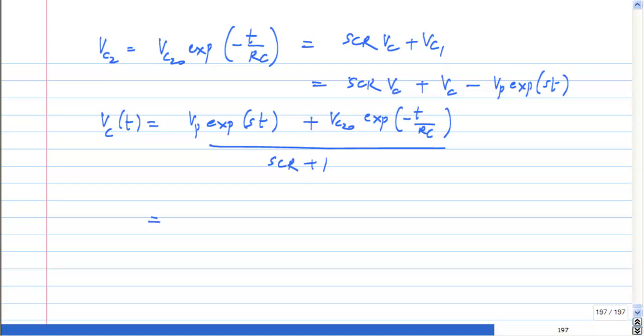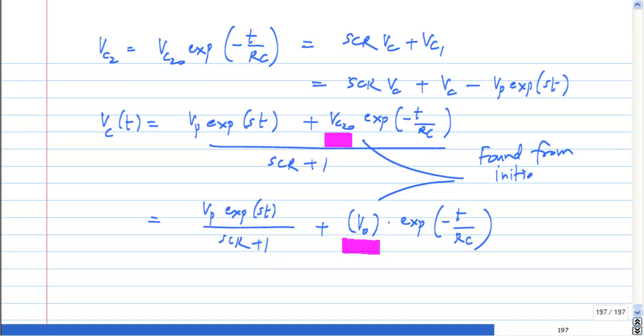Now you can express this slightly differently also. This Vc2(0), I mean Vc2 itself does not have any particular significance, except that it was an intermediate variable that we got while solving this. So this is some constant. So you can also simply write this as Vp exponential st by SCR plus 1 plus some constant times exponential minus t by RC. As usual, whether you put it like this or like that, this constant has to be found from initial conditions. So let us say you know that the capacitor voltage is some value at t equal to 0, you substitute t equal to 0 in this whole thing and then find that. So I will simply say some V naught or something like this. This has to be found from initial conditions.